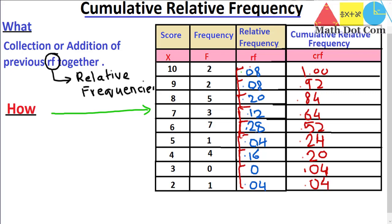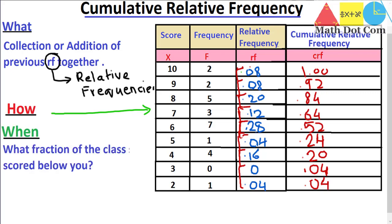Now what is the need of using cumulative relative frequency? We use it when we need to find what fraction of the class scored below a certain score. For example, if we take students who have a score of 7 and want to ask what fraction of the class scored below them, they can easily find this by using the cumulative relative frequency.